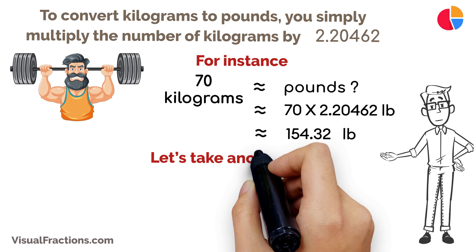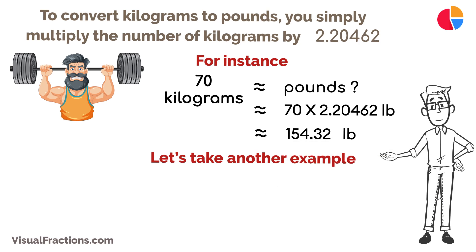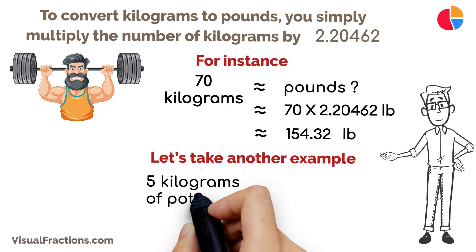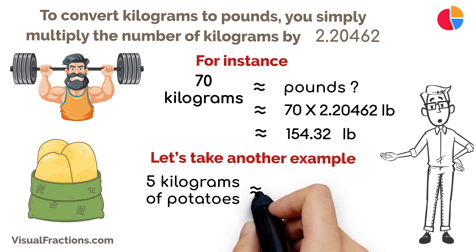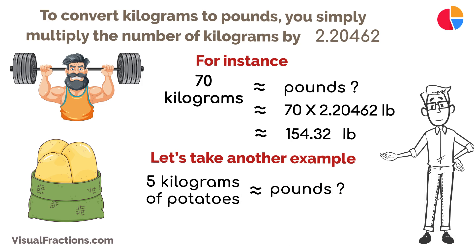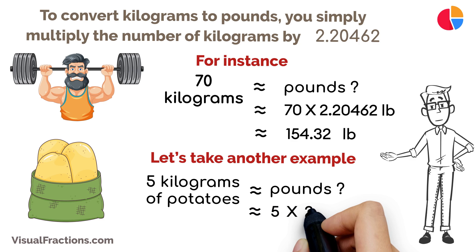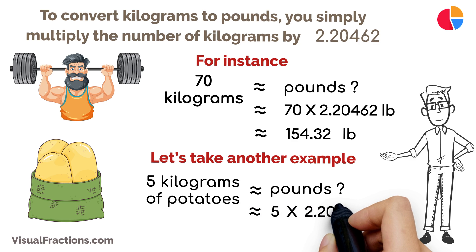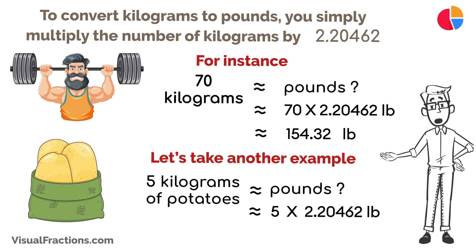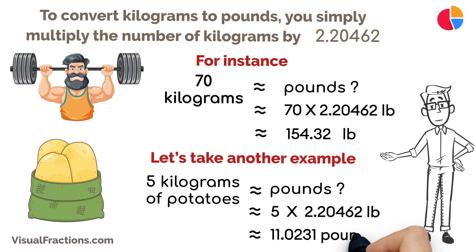Let's take another example. Suppose you're cooking and your recipe calls for 5 kilograms of potatoes, but the measurement you're familiar with is in pounds. No problem — just multiply 5 kilograms by 2.20462, and you get about 11.0231 pounds.